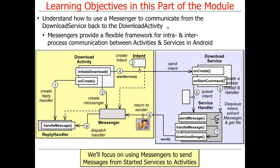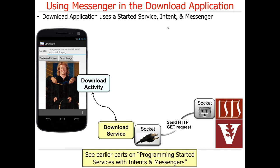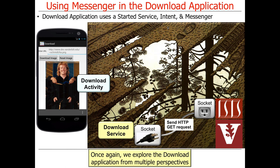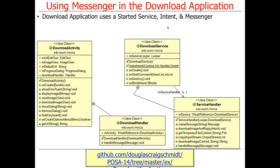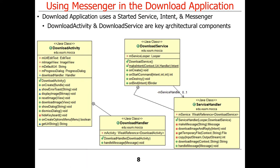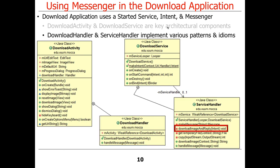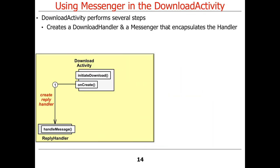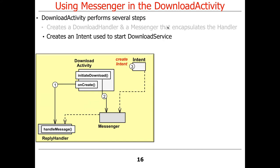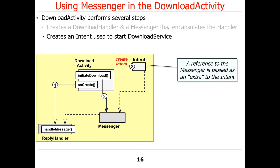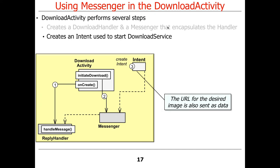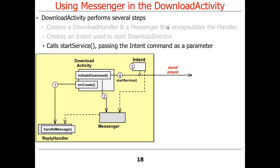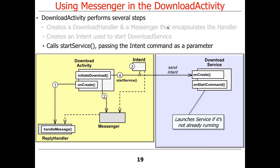We're going to talk about using messengers to send messages from started services back to activities. The download activity creates a download handler and a messenger that encapsulates the handler. The messenger is passed as an extra to the intent, and when startService is called, that intent gets sent over to the server. The service runs, and various things happen. The intent crosses a process boundary from the activity process to the service process.